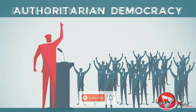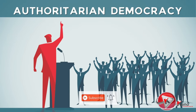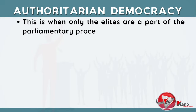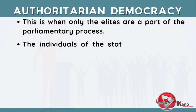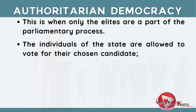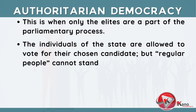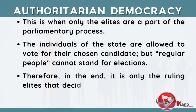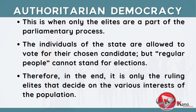The next type of democracy is authoritarian democracy. This is when only the elites are a part of the parliamentary process. The individuals of the state are allowed to vote for their chosen candidate, but regular people cannot stand for elections. Therefore, in the end, it is only the ruling elites that decide on the various interests of the population.